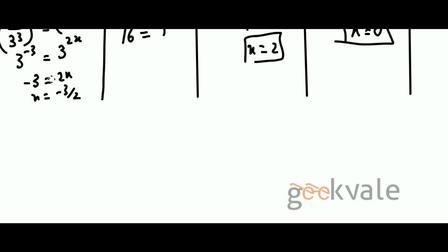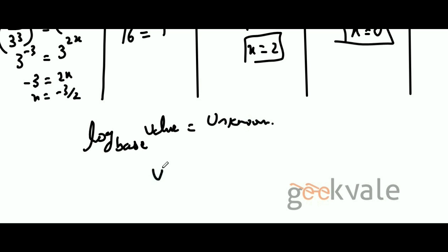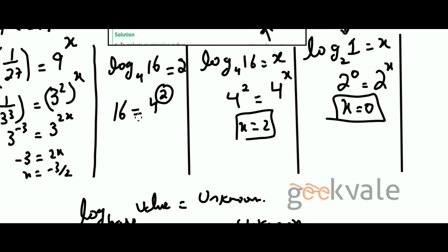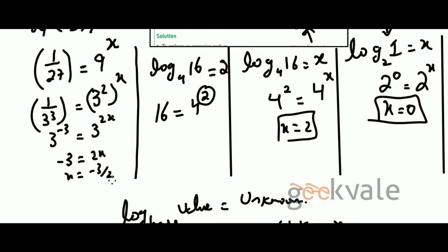Now, what do we know so far? If a log has a base and a value, it equals an unknown, and that value equals the base to the power of the unknown. However you can represent the value as an exponent of the base gives you the answer. For example: 16 represented as 4 to the power 2 gave answer 2; 1 represented as 2 to the power 0 gave answer 0; and 1 over 27 represented as 9 to the power minus 3 over 2 gave answer minus 3 over 2.